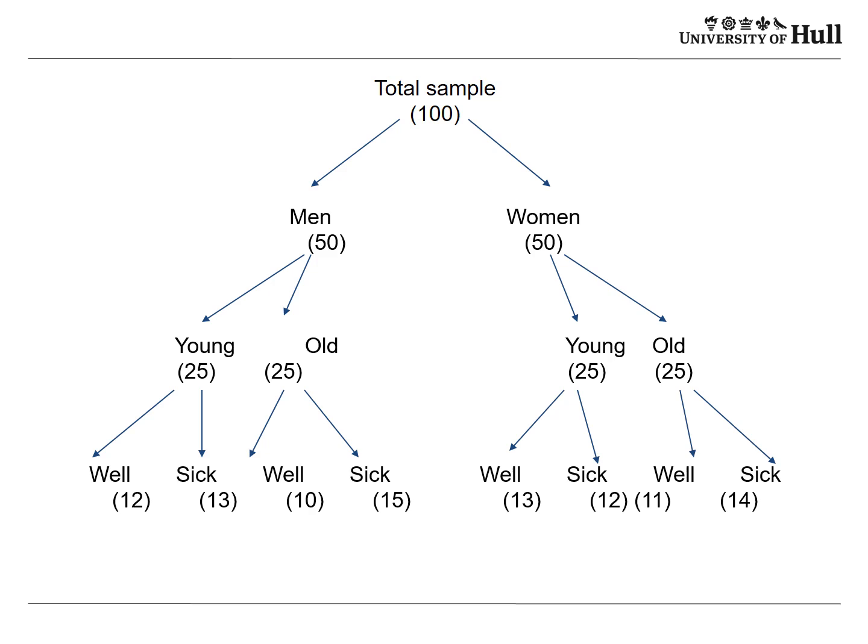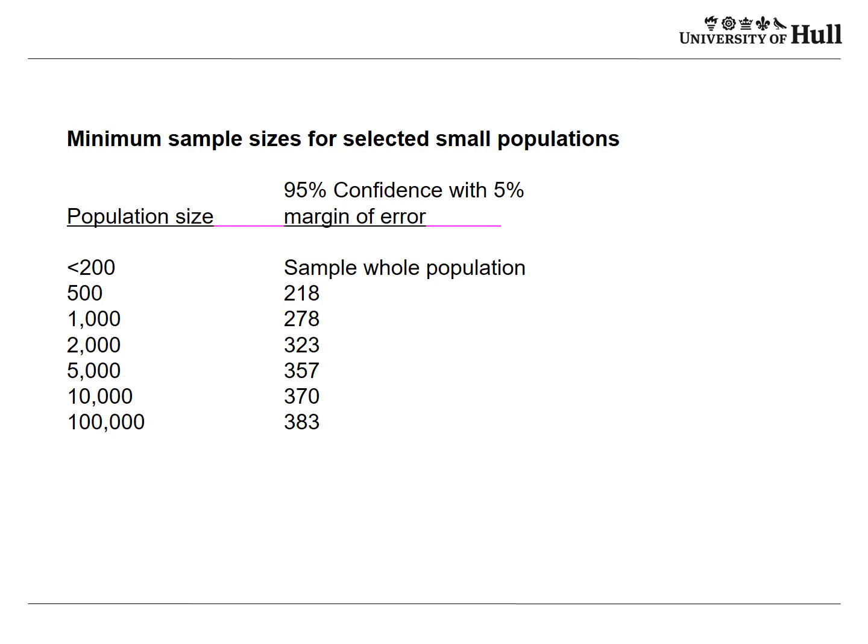If you had 100 people and wanted to compare younger sick women with well women, you might only have 13 in one group and 12 in the other — not enough for a statistical test. A ready reckoner from Jackson Furman's book on survey methods shows that at 95% confidence, if you've got under 200 people you take the whole sample, and if you've got 100,000 people you take approximately 400. The population size and sample size are not linearly related, so don't assume a huge population requires a huge sample.